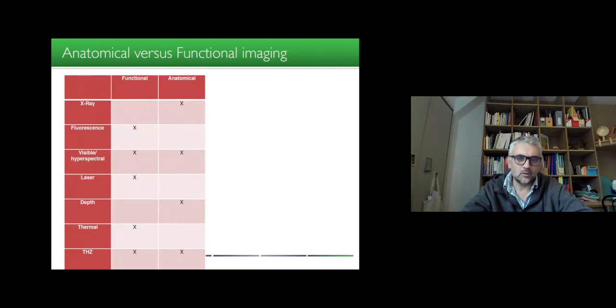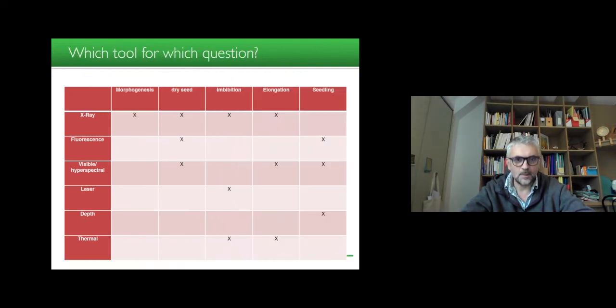So now if we come to a kind of proposal of what can be used for what, maybe we can classify functional imaging and anatomical imaging. X-ray can be used for anatomical, also visible and hyperspectral, also visible and hyperspectral depth, LIDAR for anatomical again, and terahertz also. For functional you will find imaging systems as we explained earlier. Which tool for which question? If you want to do morphogenesis, x-ray can be used. Dry seed, you can use x-ray, fluorescence, visible, hyperspectral. Imbibition, you will use x-ray, laser and thermal imaging. Elongation, you can use x-ray, visible spectral imaging and thermal imaging. And also for the seedling monitoring, you can use fluorescence, visible and depth as we presented before.